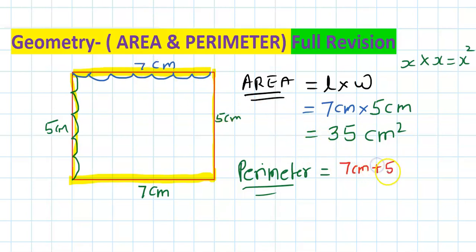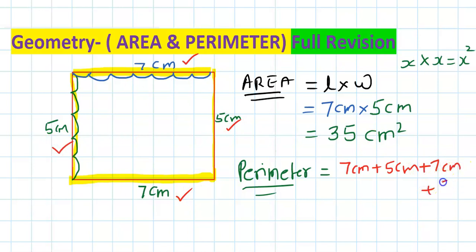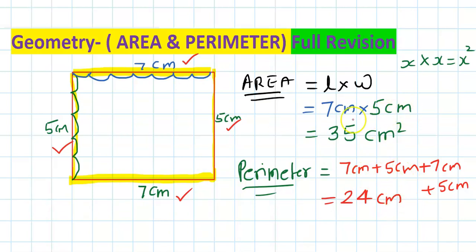7 centimeters plus 5 centimeters, then again 7, then again 5. So 7 plus 7 is 14, and 5 plus 5 is 10. 14 plus 10 is 24 centimeters. Because you are not multiplying centimeter times centimeter, it won't be centimeter square. When you multiply centimeter by centimeter it is centimeter square, but when you add centimeters it remains centimeters — it could be meters or kilometers depending on the unit. This is how we find the perimeter of a rectangle.